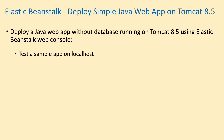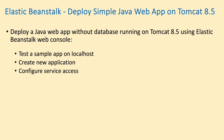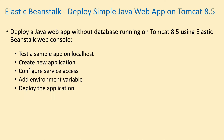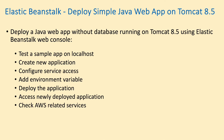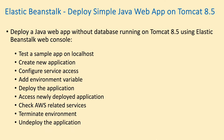The steps covered are: test a sample Java web application on localhost, then create a new application in Elastic Beanstalk console and configure service access, add environment variables and deploy the application, access the newly deployed application, check AWS-related services, and finally terminate the environment and undeploy the application.